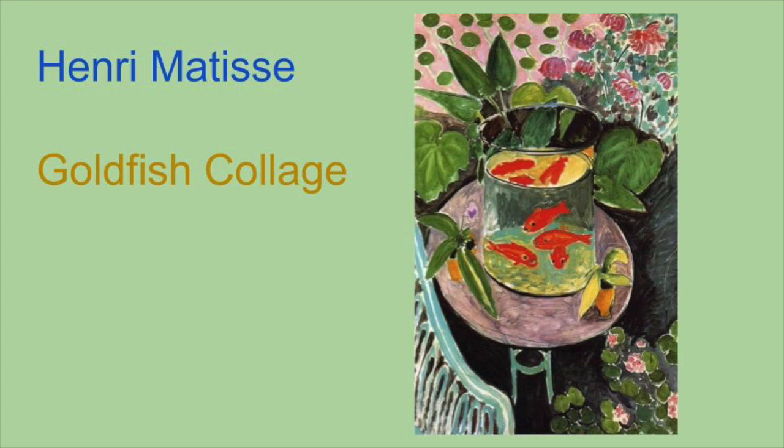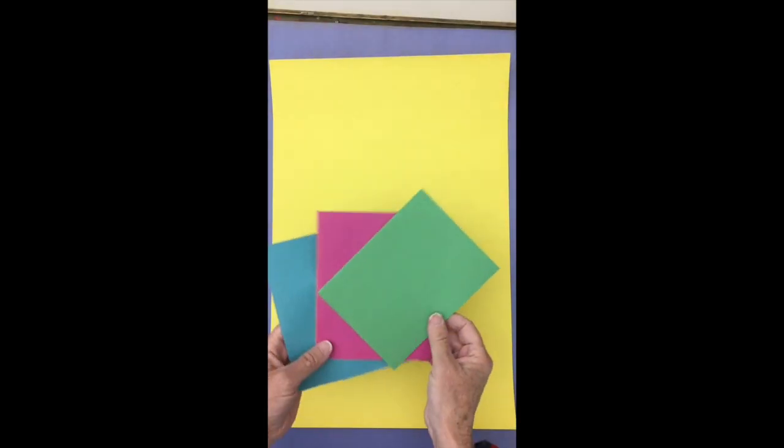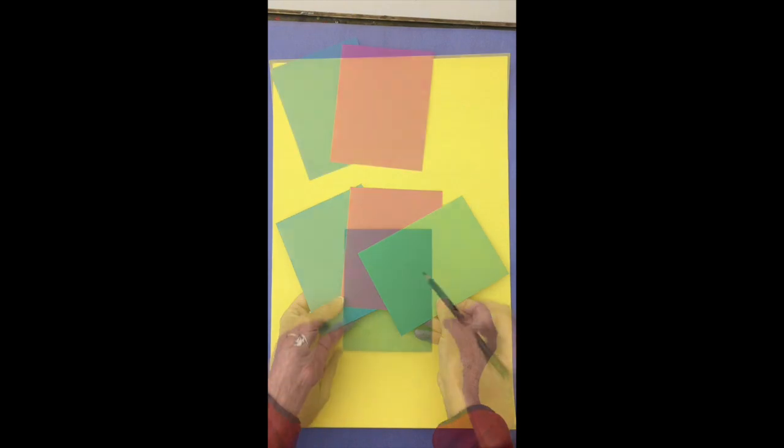We're learning about Henri Matisse and we're thinking about his goldfish. We're going to make a collage. We'll start with three colorful pieces of paper.